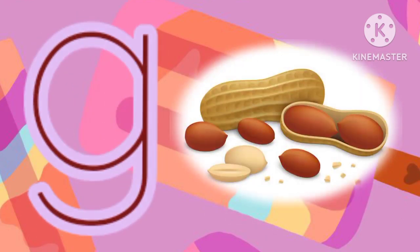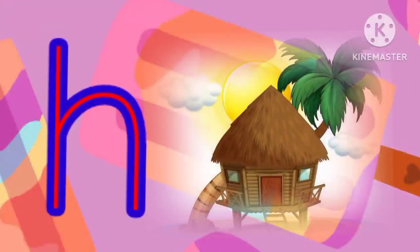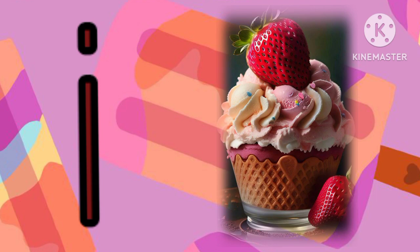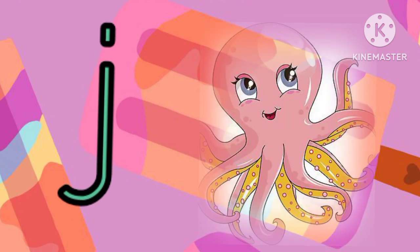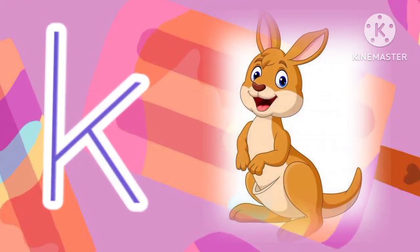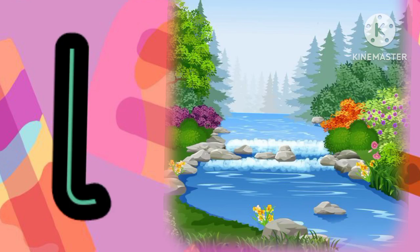G for groundnut, H for hut, I for ice cream, J for jellyfish, K for kangaroo, L for lake.